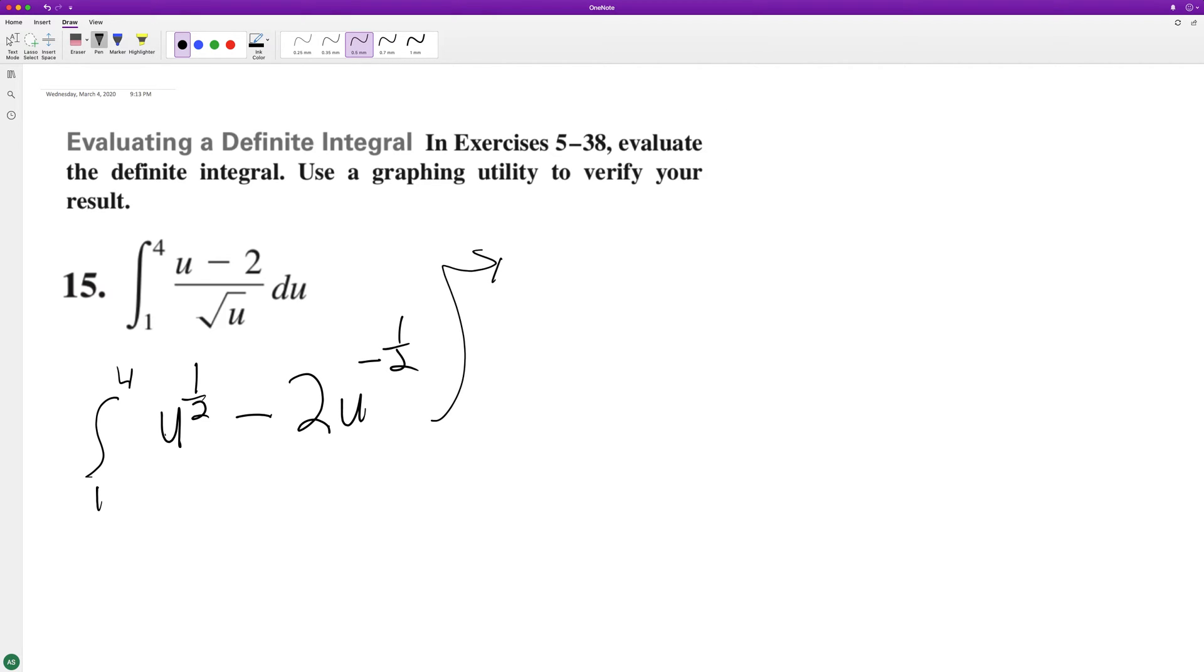So we can go and integrate. We end up with one half. So two thirds U raised to the three halves minus, or actually plus, or minus four U raised to the one half.